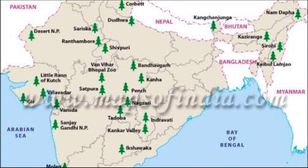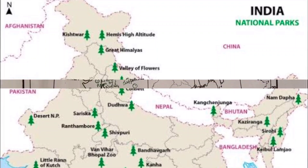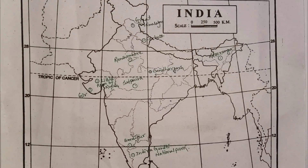Now I will show the ten famous national parks in India. The states I have chosen are: one in Assam, one in Uttarakhand, one in Himachal Pradesh, one in Rajasthan, two national parks in Gujarat, two national parks in Madhya Pradesh, one from Karnataka, and one from Tamil Nadu. Many more national parks exist in India, but I have chosen the ten most famous ones.